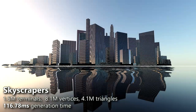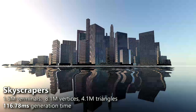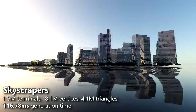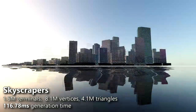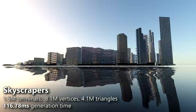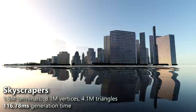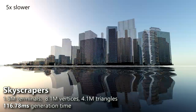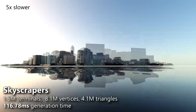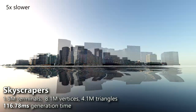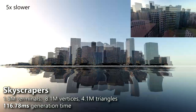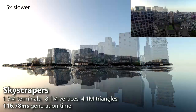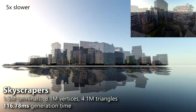500 skyscrapers with detailed facades and windows are generated in 117 milliseconds using our grammar. Geometric context-sensitive rules guarantee that balconies do not interfere and windows are not occluded. The high detail of the geometry only becomes apparent when the skyscrapers are approached.